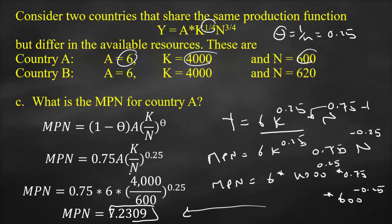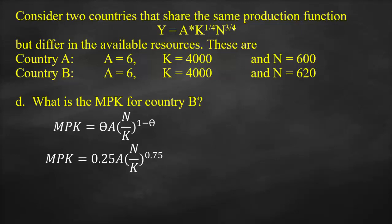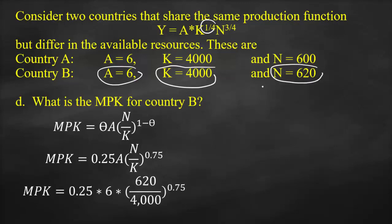The next part asks for the MPK for Country B. Using the formula MPK = θ × A × (N/K)^(1-θ), with θ = 0.25, we substitute A = 6, K = 4,000, and N = 620: MPK = 0.25 × 6 × (620/4000)^0.75. This gives an MPK of 0.3705.